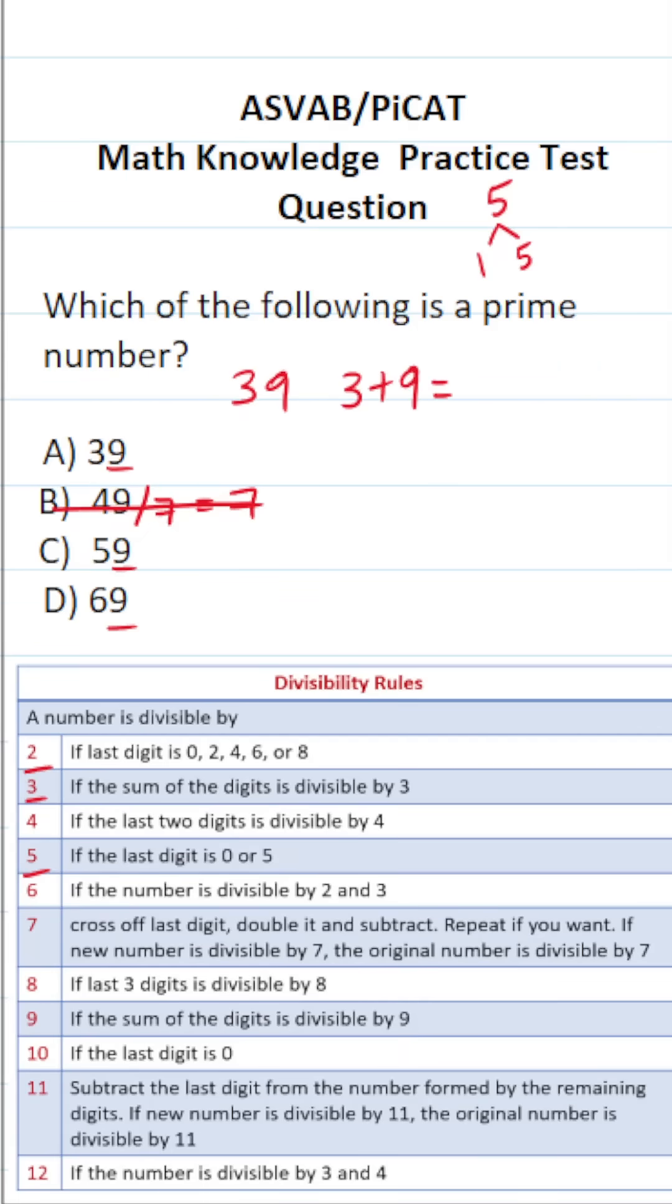That's going to be three plus nine. Three plus nine is twelve. Is 12 divisible by three? 12 divided by three is four. Therefore, I know A, 39, is divisible by three and can't be prime.